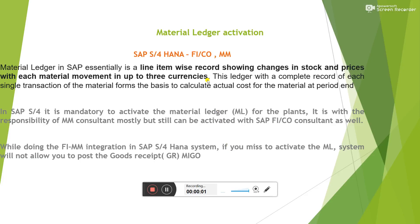Today let us see how to activate the Material Ledger in S4 HANA system. While doing FI-MM integration, without activating the Material Ledger, users cannot post their goods receipt entry through the MIGO transaction. Material Ledger is used to value the material price in different plants with different pricing.